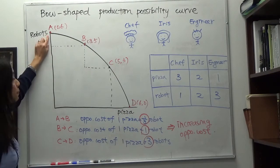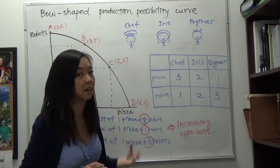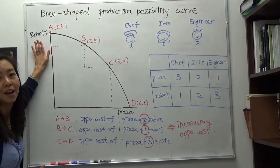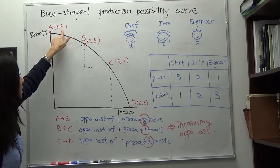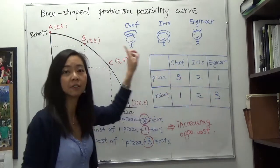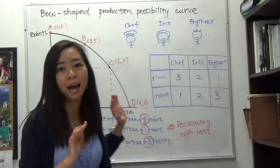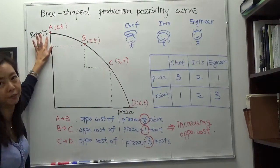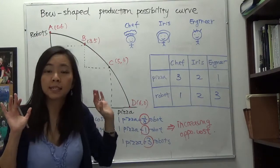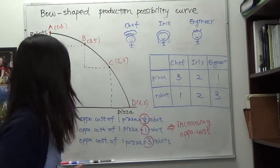We start at point A, where everyone in this economy is making robots. We have one plus two plus three, which gives us six robots. But because everyone is producing robots, we have no pizza and everyone is starving, so that's not ideal.